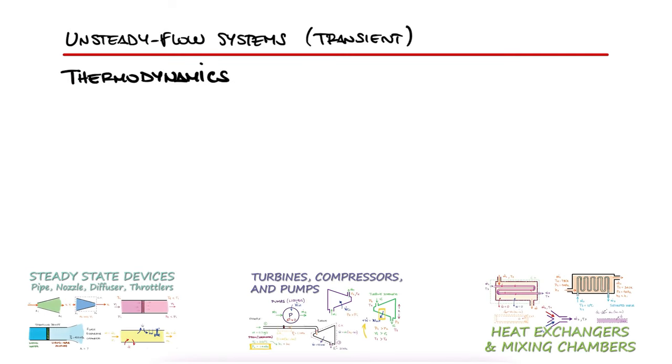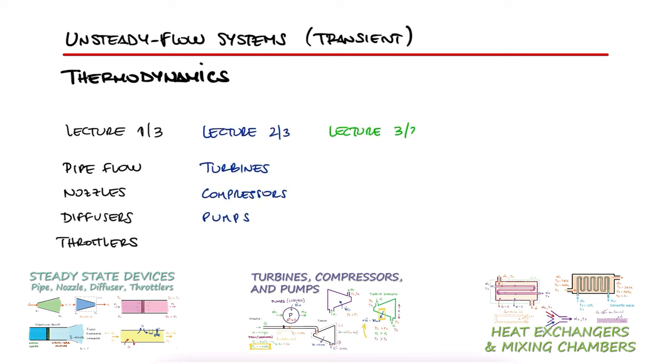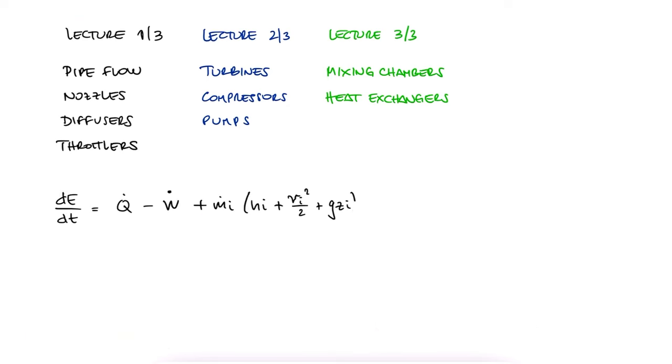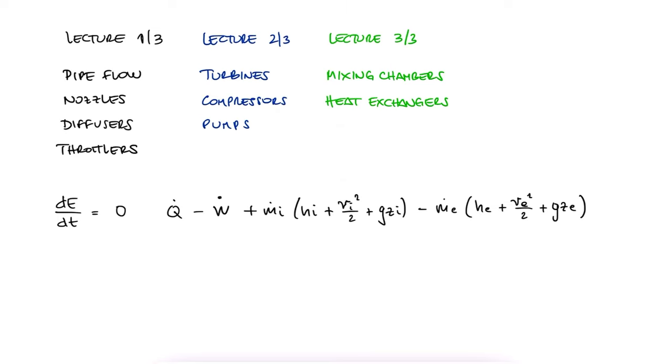In all the devices that we studied in the last three lectures, links below, including pipes, nozzles, diffusers, throttling devices, turbines, compressors, pumps, mixing chambers, and heat exchangers, we started with the energy conservation equation, and in all cases, we wrote the change in energy over time as zero, since these were all steady state devices.